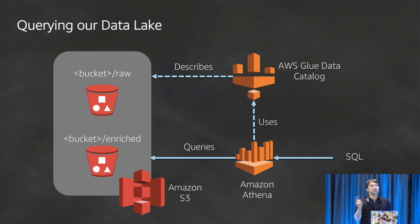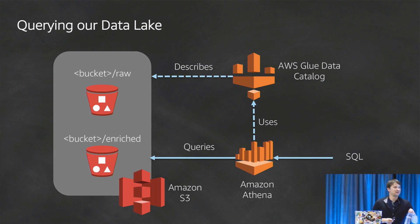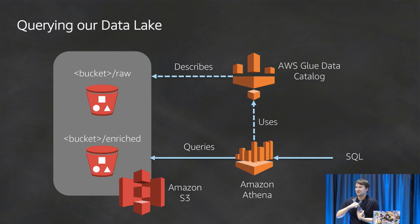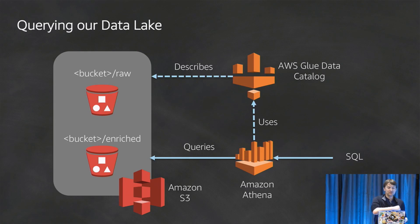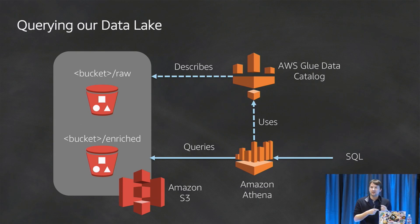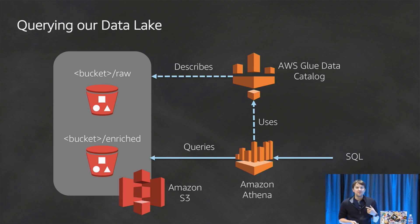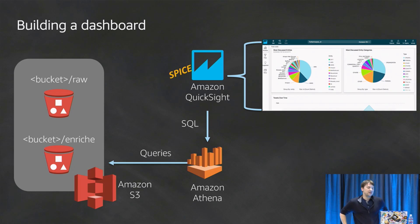We could have done this entire thing in Glue if we wanted to, but I wanted to show other services. We run Glue to infer the schema from the tweets — it creates tables. The only mistake Glue made was detecting Unix epoch time as an integer instead of a date, which we just edit manually. Then we get our Athena table and can write SQL queries, but we hook it up to QuickSight and have QuickSight generate those queries for us.